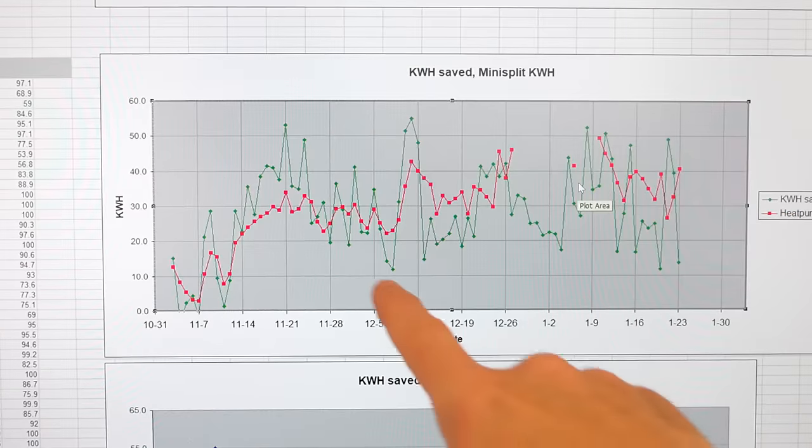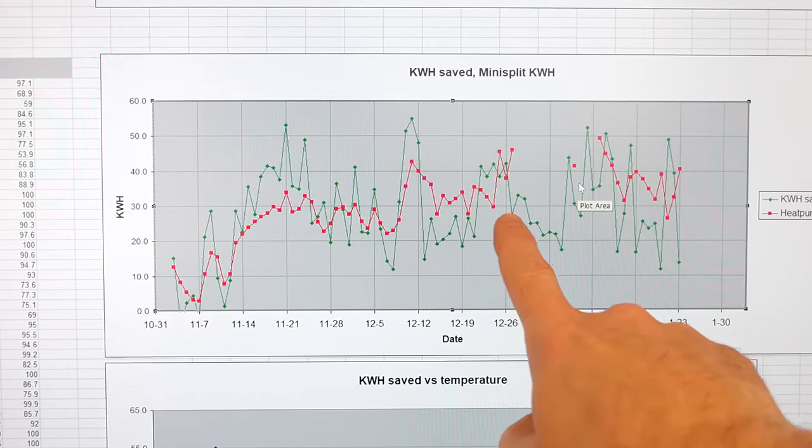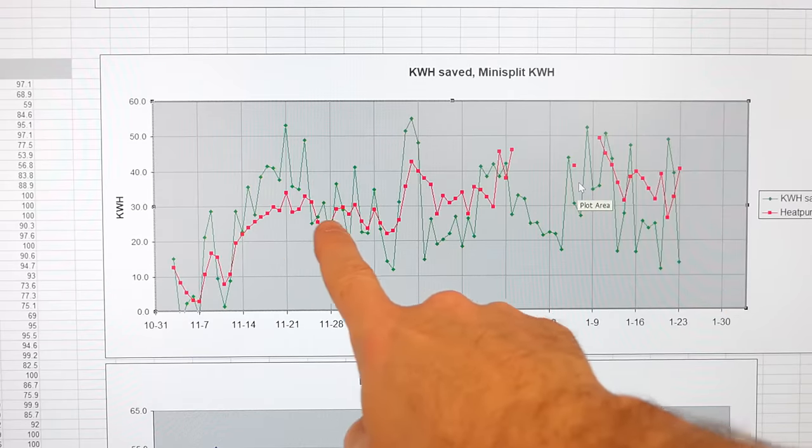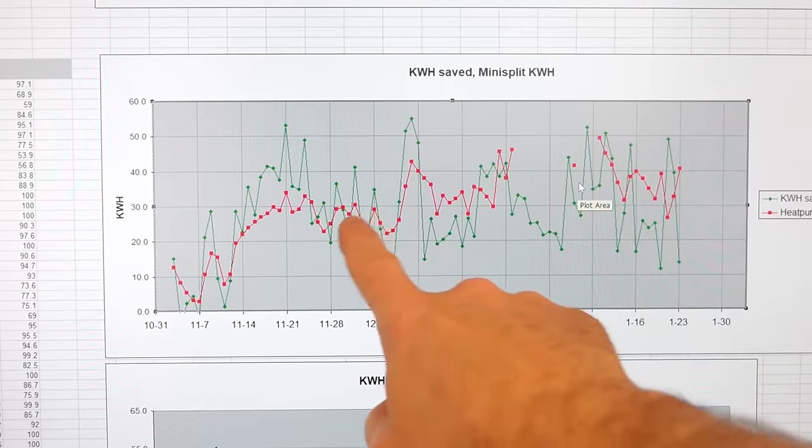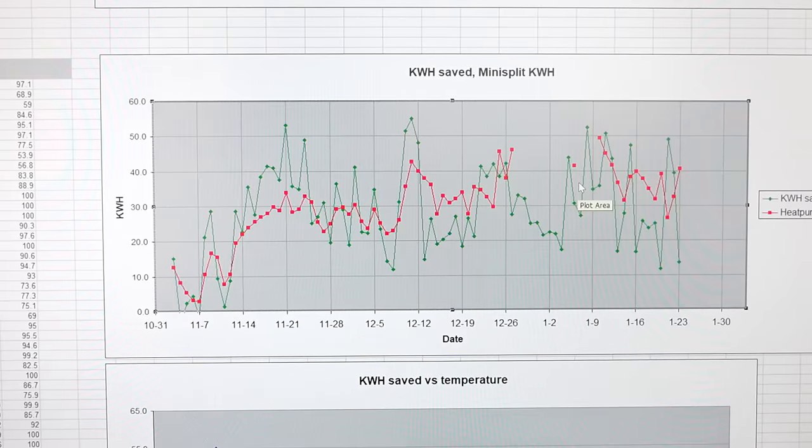This graph is for just this winter so far and the green line is how many kilowatt hours we saved compared to my prediction and the red line is how many kilowatt hours the mini split actually used. So you can see on average the mini split uses about as many kilowatt hours as we saved which is to say it puts out about twice as much heat as a regular electric heater would for the same amount of energy.